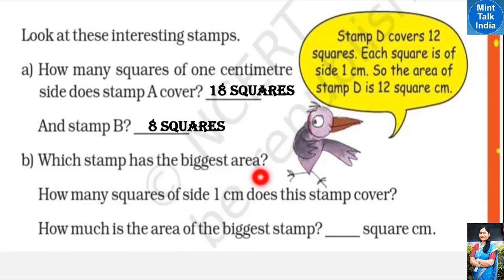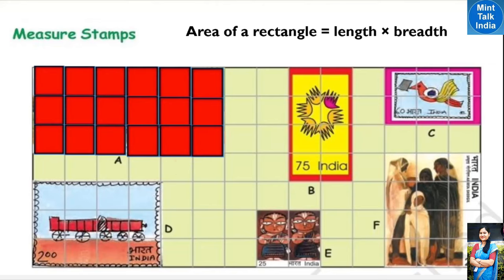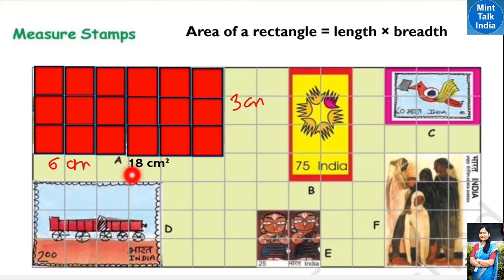Now we need to find which stamp has the biggest area. The formula for area of a rectangle is length × breadth. For stamp A: length is 6 cm, breadth is 3 cm, so area = 6 × 3 = 18 square centimeters. For stamp B: length is 2 cm, breadth is 4 cm, so area = 2 × 4 = 8 square centimeters.